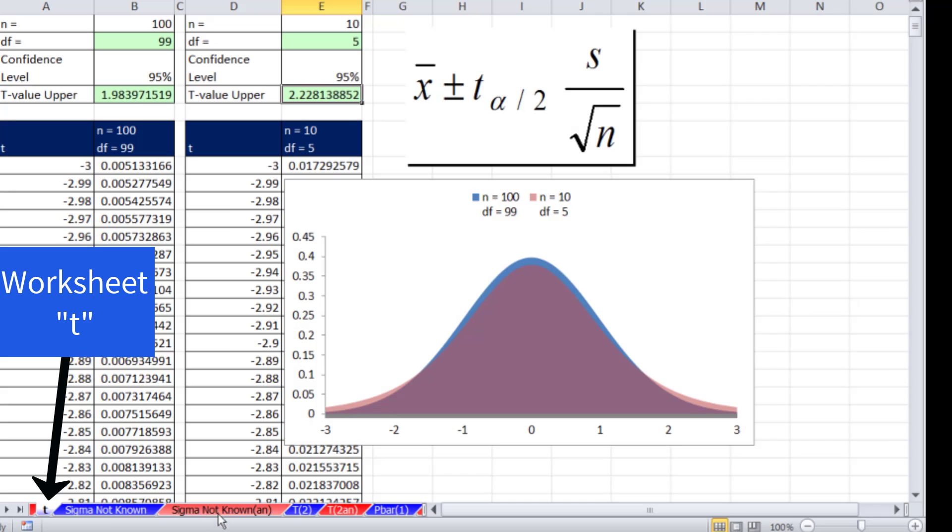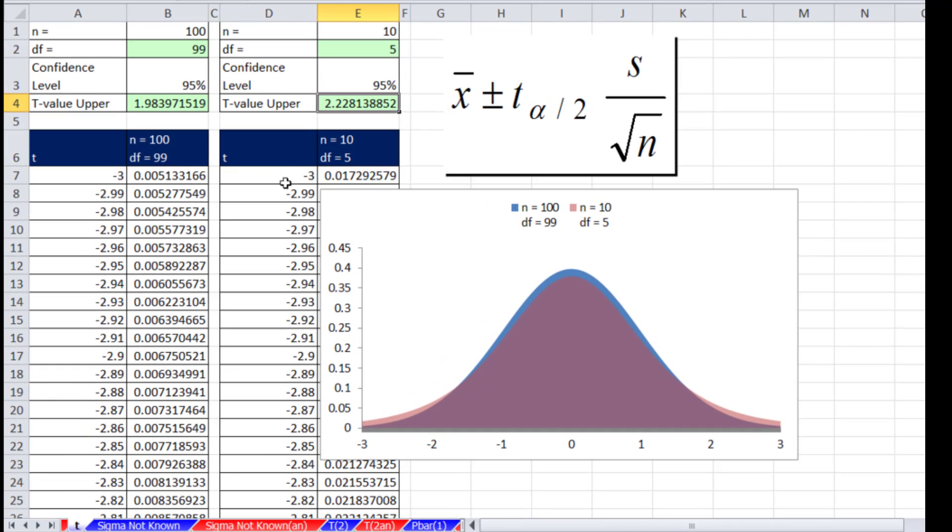Let's go over to Excel. Here's a little picture I made in Excel on the t sheet just to show the difference. So degrees of freedom, 9 and 99. Or if I change this to 5, you could see the smaller the n or degrees of freedom, the more spread out the distribution.